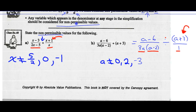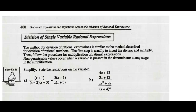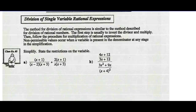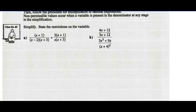Example 3: division of a single variable rational expression. The method is similar to rational numbers — invert the divisor and multiply, then follow the procedure for multiplication of rational expressions. However, non-permissible values occur when a variable is present in the denominator at any stage. Simplify and state the restrictions. Step 1 is always to factor — these rational expressions are already completely factored. So my first step is going to be stating non-permissible values.